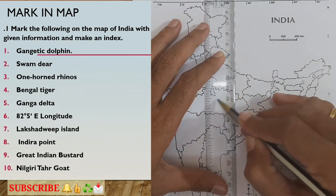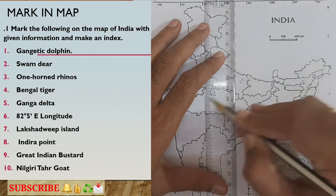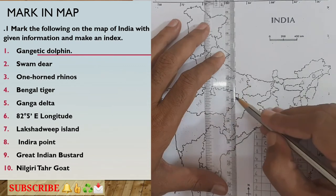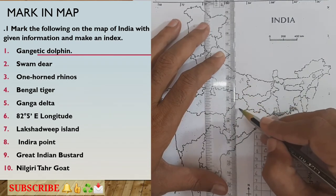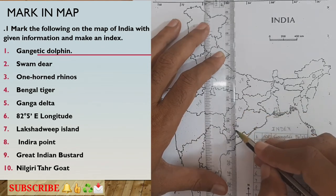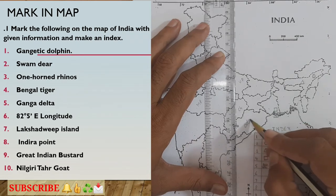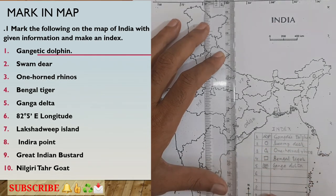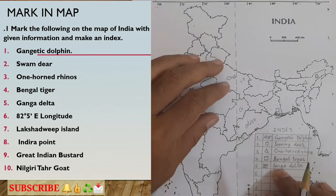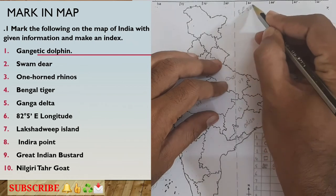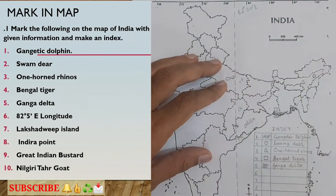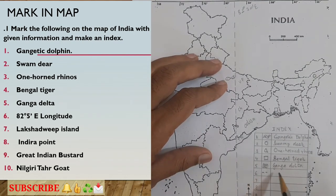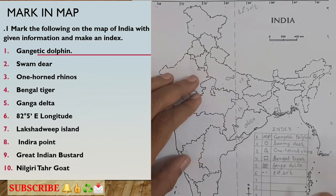The 82°30'E longitude passes through Uttar Pradesh, then through part of Madhya Pradesh, then Chhattisgarh, then part of Odisha, and then Tamil Nadu. Accuracy is very important — it does not touch Sri Lanka; it passes by the side of Sri Lanka. I will write '82 degrees 30 minutes East' along the line. If asked, you can label it as east longitude.